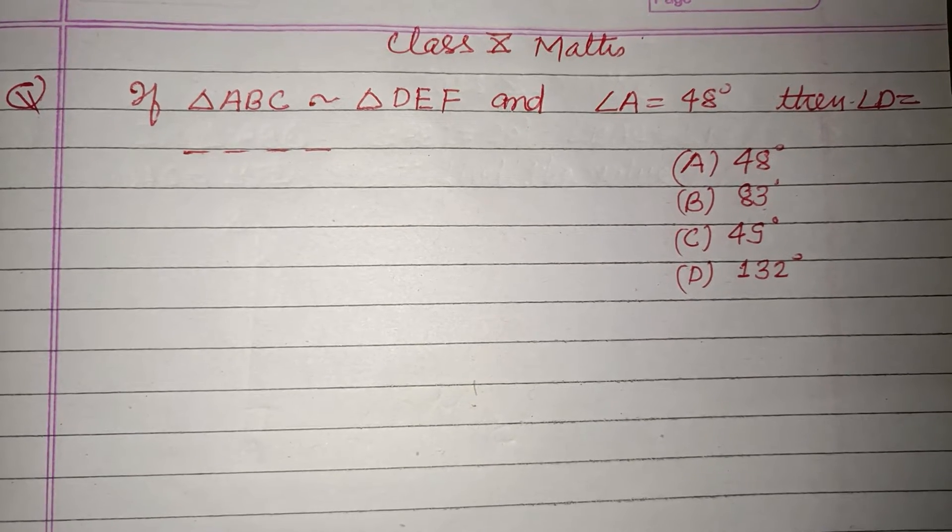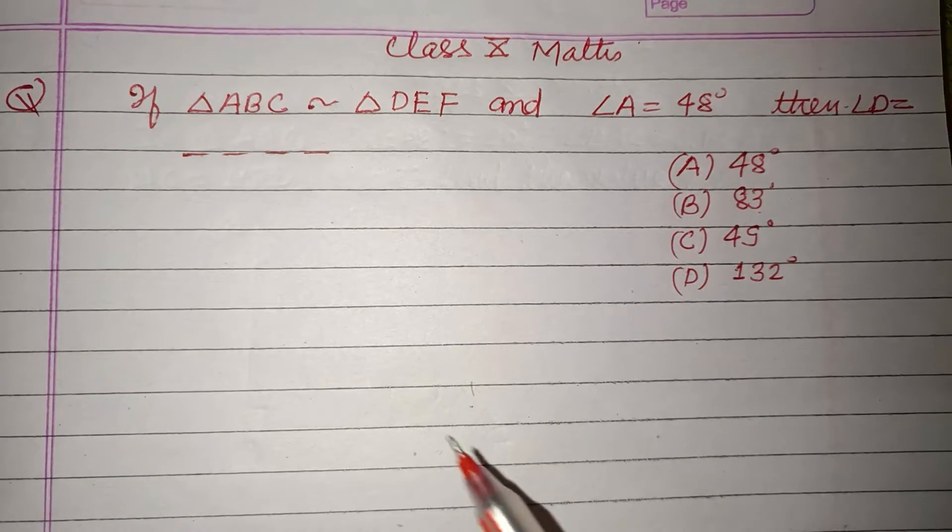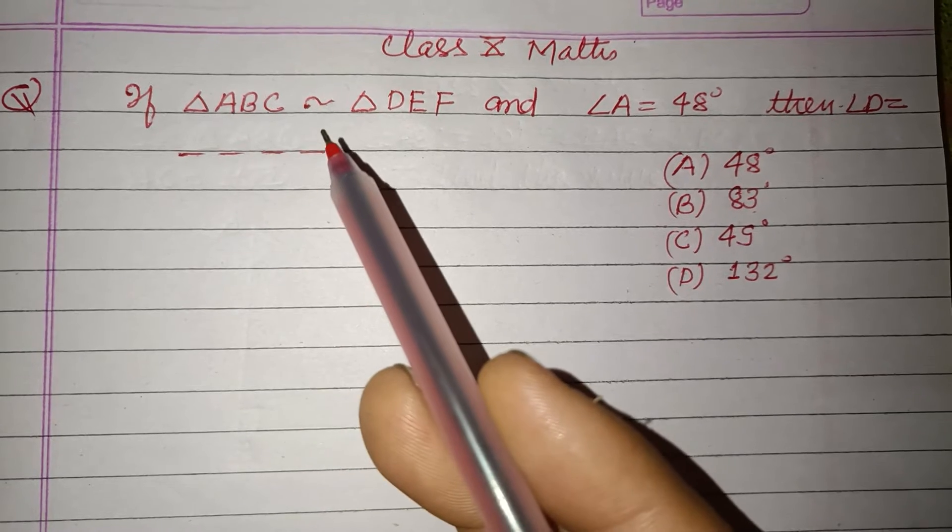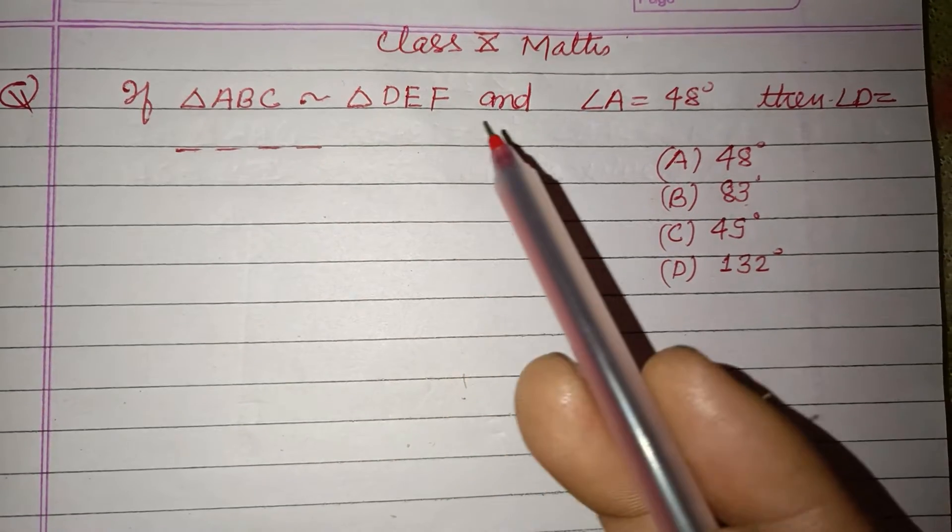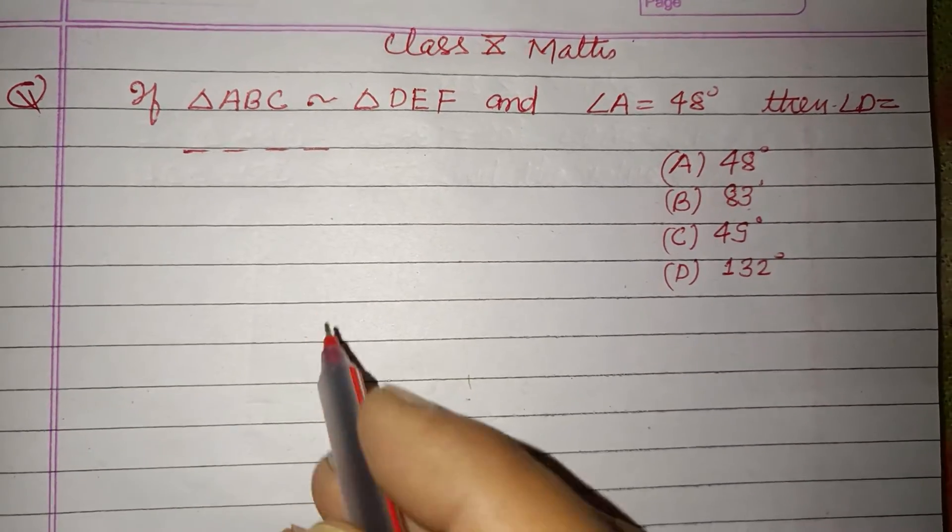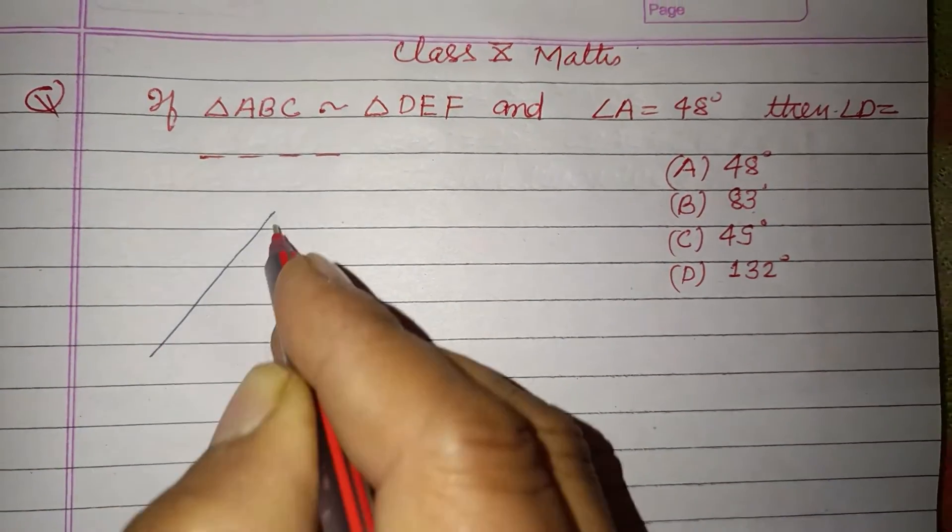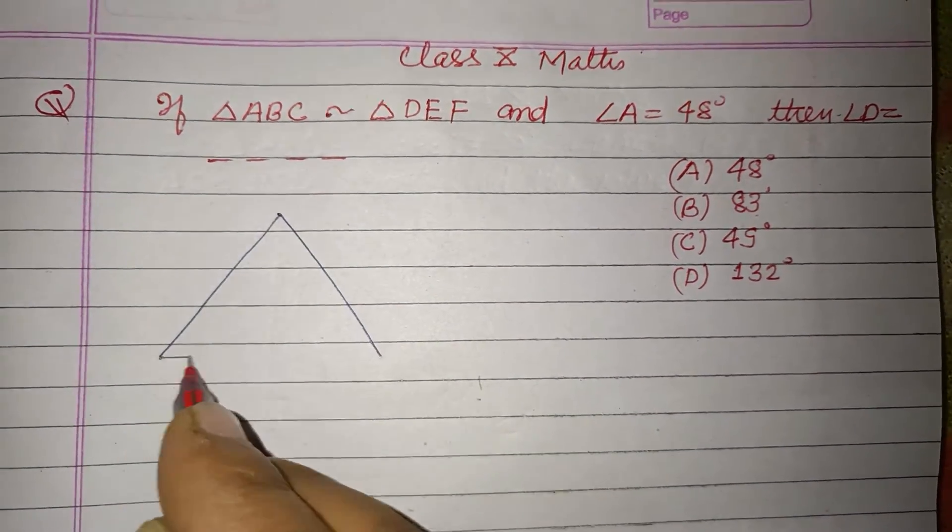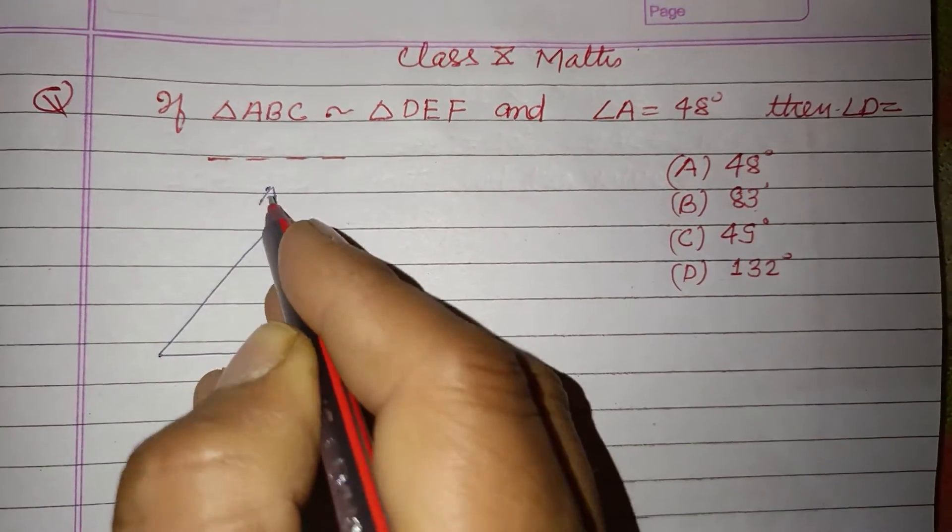Hello viewers, welcome to this YouTube channel. This is a question from Class 10. If triangle ABC is similar to triangle DEF and angle A is 48 degrees, then what will angle D be? So students, here are two triangles: we have triangle ABC